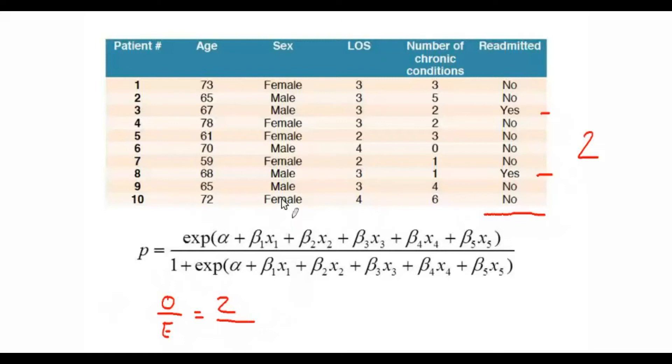And the way we do that is for each one of these patients, we plug in the predictors to this equation here to get the probability of readmission. We do that for all 10 patients.